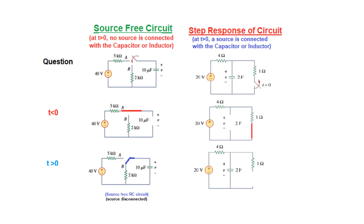This circuit on the right: the switch is initially closed and is opened at t = 0. Before t = 0, the switch is closed and the capacitor behaves like an open circuit after being fully charged. After t > 0, the switch is open. But if you look carefully, the energy storage device — the capacitor — is still connected with the source. Therefore, this circuit is a circuit with source, or a step response circuit.